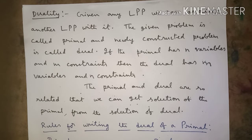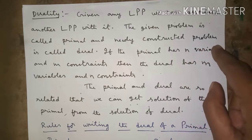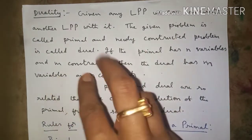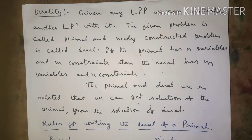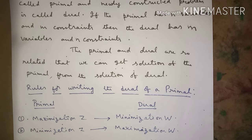If the primal has n variables and m constraints, then the dual has m variables and n constraints — just quite the reverse. The primal and dual are so related that we can get the solution of the primal from the solution of the dual.